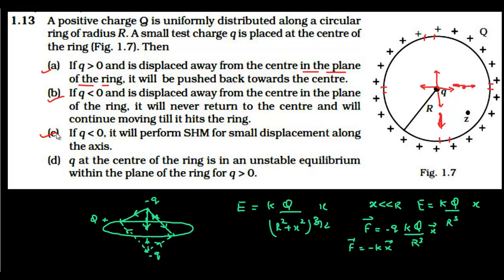Option D states that q at the center of the ring is in unstable equilibrium within the plane of the ring for q greater than zero. This is wrong — if q were negative it would be unstable in the plane, but for q greater than zero it is stable. So option D is incorrect. The correct options are A, B, and C.